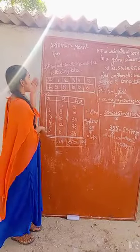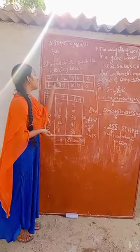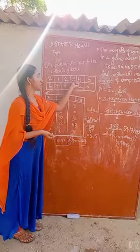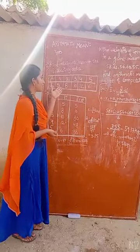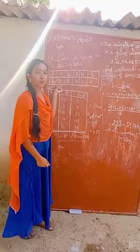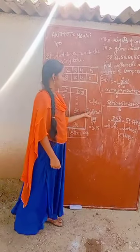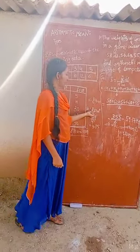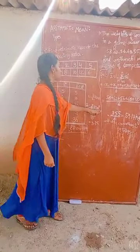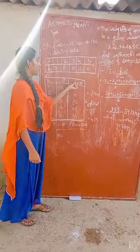Next, we have a second problem. Find the arithmetic mean of the following data. We are given x values: 1, 2, 3, 4, 5 and corresponding f values: 5, 8, 10, 12, 16. This is grouped data. The grouped data formula is x-bar equals 1 by capital N, summation from i=1 to n of fi times xi.